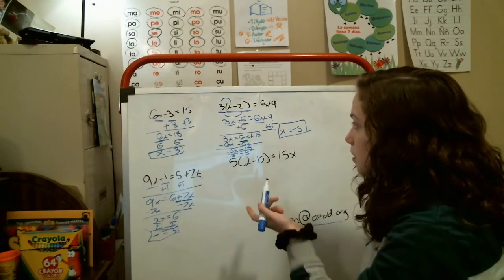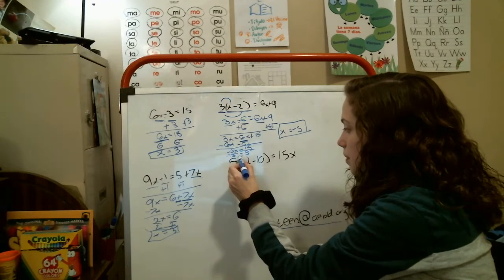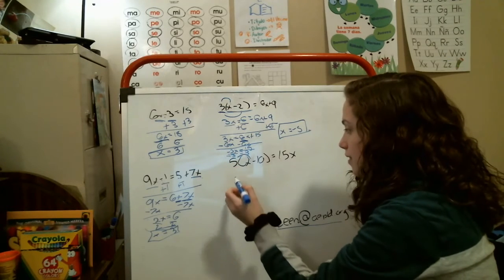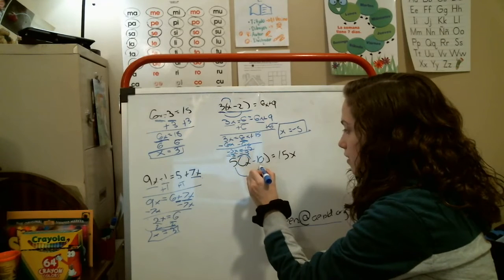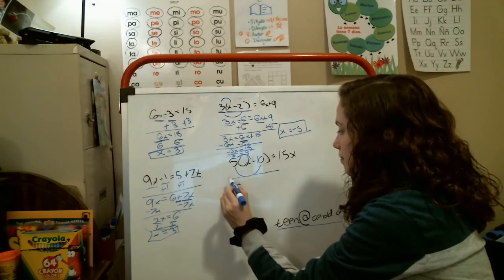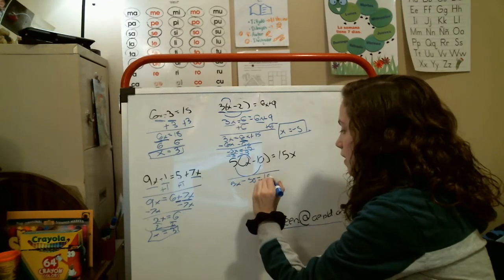Now we're going on to our last problem, which is very similar to the one above. Again, the distributive property: we distribute the 5 into this x here, and we distribute this 5 into this negative 10. That means you have 5x minus 50 equals 15x.